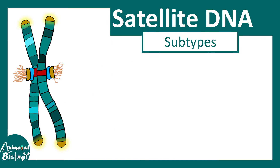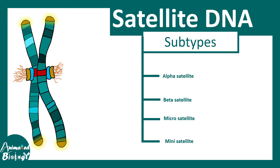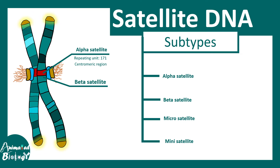There are several subtypes of satellite DNA, classified according to their repeat unit length and location. Alpha satellites are highly enriched in the centromeric region and have a repeat unit of 171 base pairs. Beta satellites are found in the pericentric region and have a repeat unit of approximately 68 to 70 base pairs.